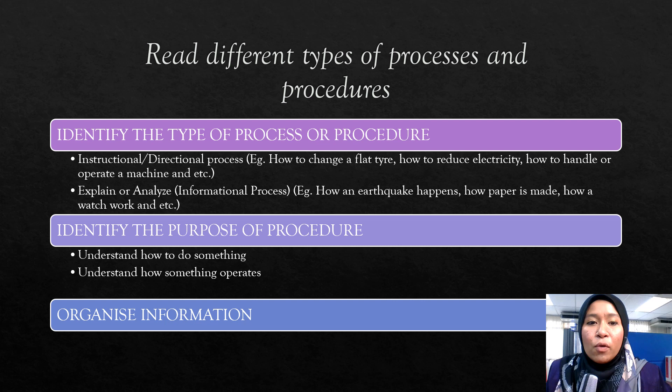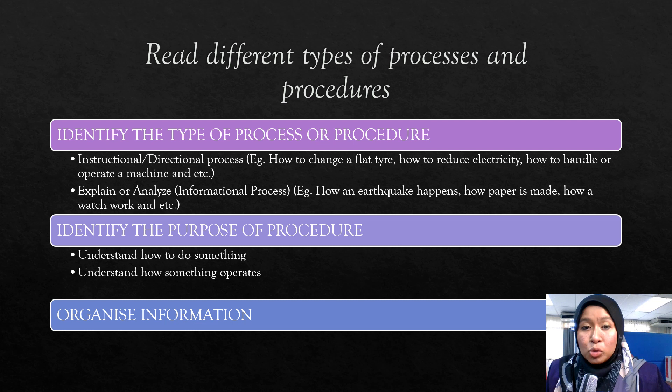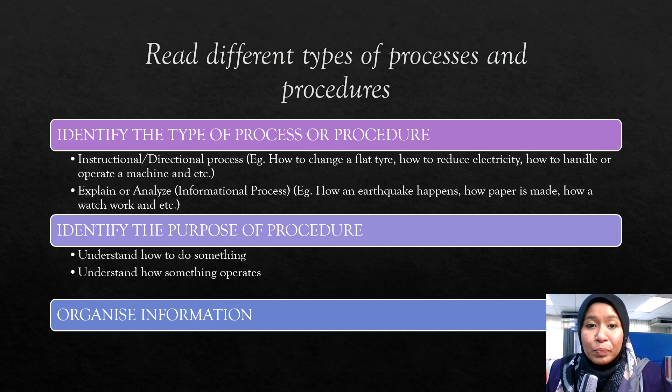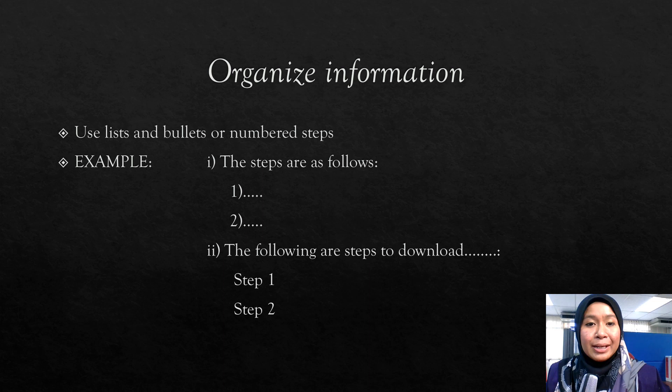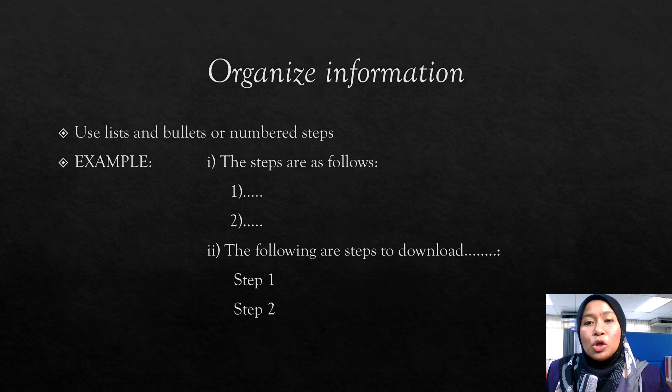There is no need for readers to create or follow the process like a procedure. When you want to understand processes and procedures, you need to be able to organize the information you have identified. Take notes on the information that you obtain and organize it. Pay close attention to the order or sequence of the process or procedures. One way to organize information is by using lists and bullets or numbered steps — this can be bulleted or numbered.